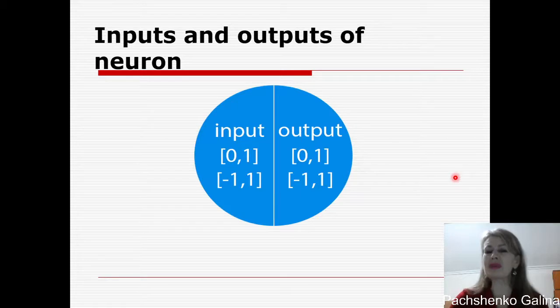Inputs and outputs of neurons. We take input like 0 or 1 and then on the output will be 0 or 1, or we may take -1 or 1 and then on the output will have -1 or 1.